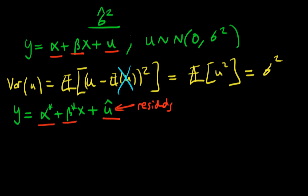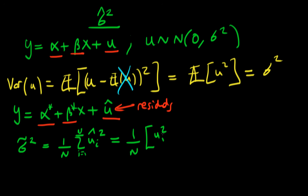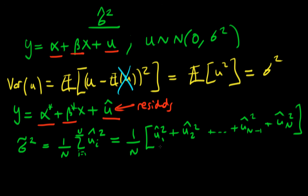So it might seem to make sense to form some sort of estimator for the population variance, which we're going to call sigma tilde squared, which is equal to 1 over n times the sum of i equals 1 to n of u hat i all squared. Writing this out in full, that would be 1 over n times u hat 1 squared plus u hat 2 squared, continuing all the way up to u hat n minus 1 squared plus u hat n squared. And when we take the expectations of both sides to see whether this thing is unbiased, you might think about each of these terms as being an unbiased estimate of sigma squared, so that each one would contribute sigma squared, and so my expectation of sigma tilde squared would be equal to n sigma squared divided by n, which would just be sigma squared.